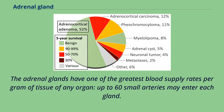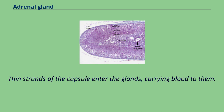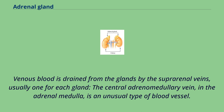The adrenal glands have one of the greatest blood supply rates per gram of tissue of any organ; up to 60 small arteries may enter each gland. Three arteries usually supply each adrenal gland, and these blood vessels supply a network of small arteries within the capsule of the adrenal glands. Venous blood is drained from the glands by the suprarenal veins, usually one for each gland. The central adrenomedullary vein, in the adrenal medulla, is an unusual type of blood vessel.